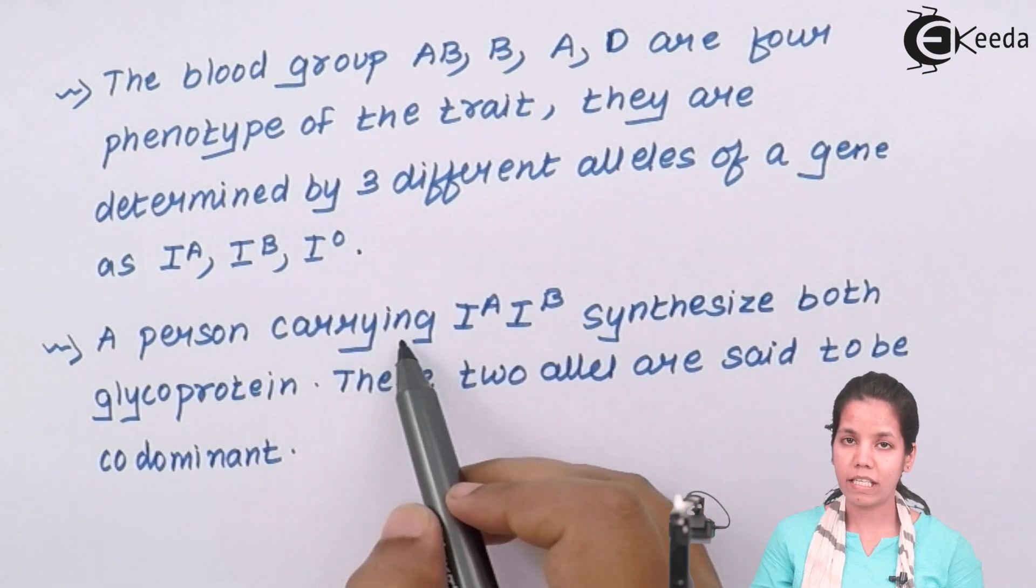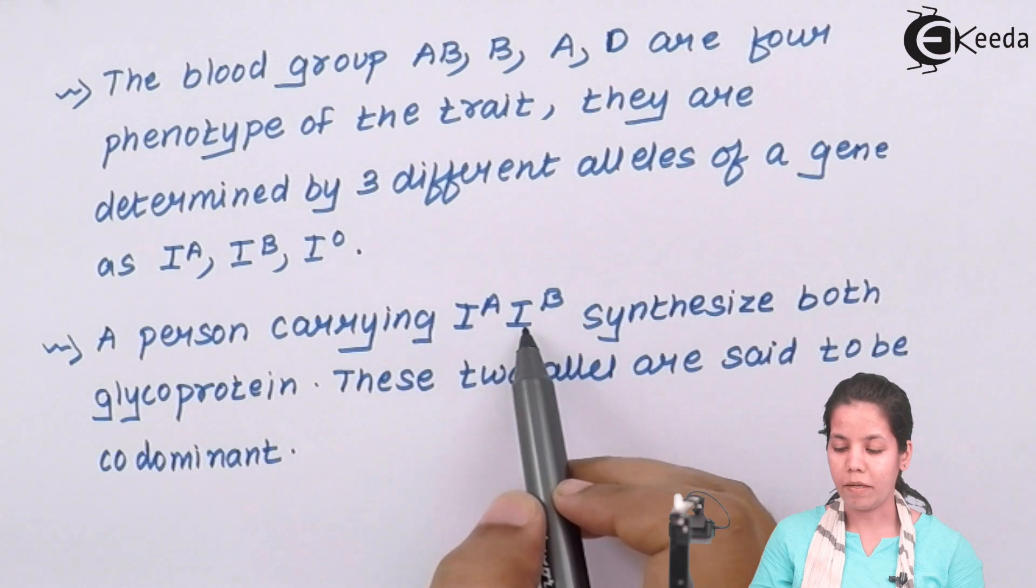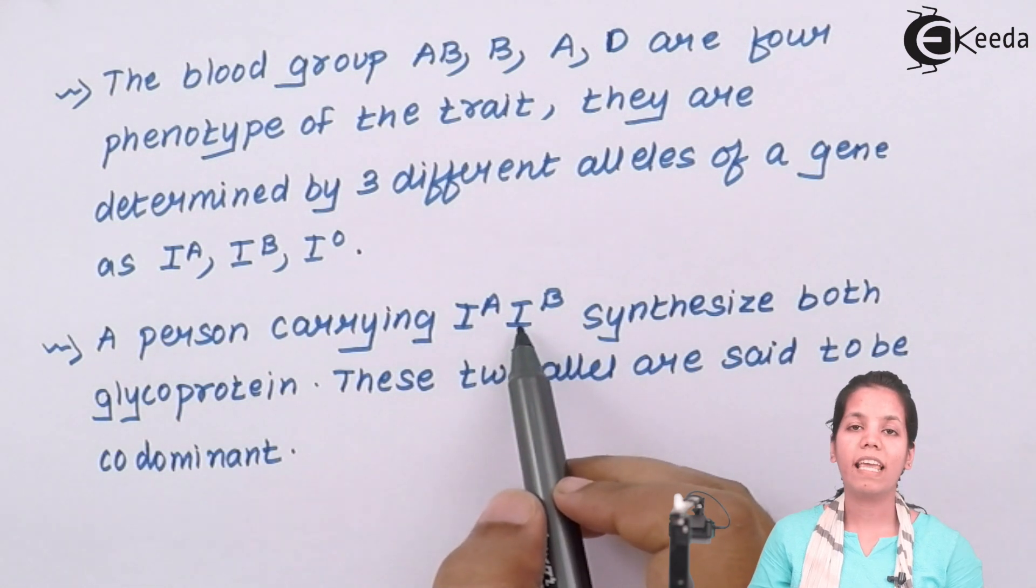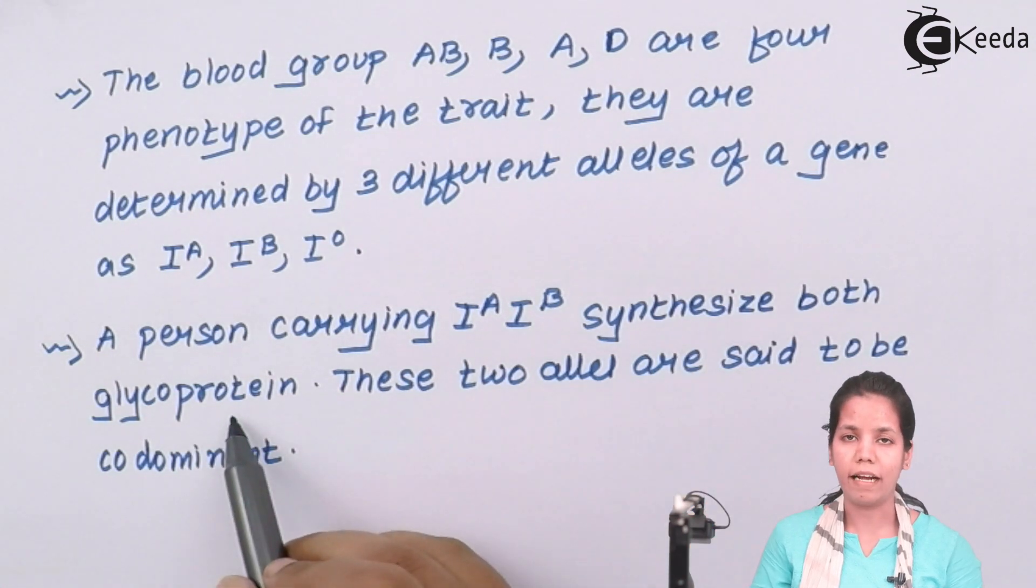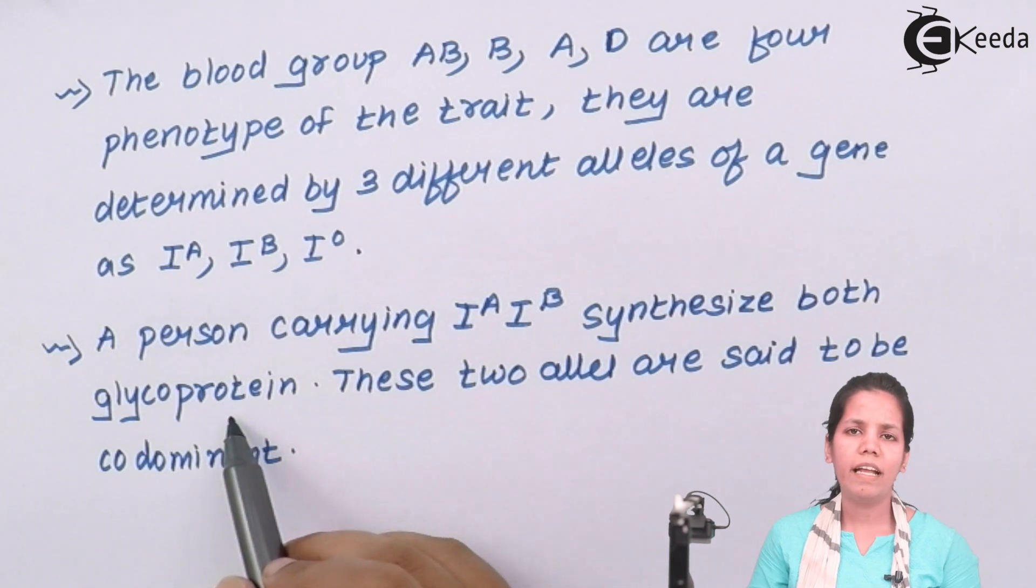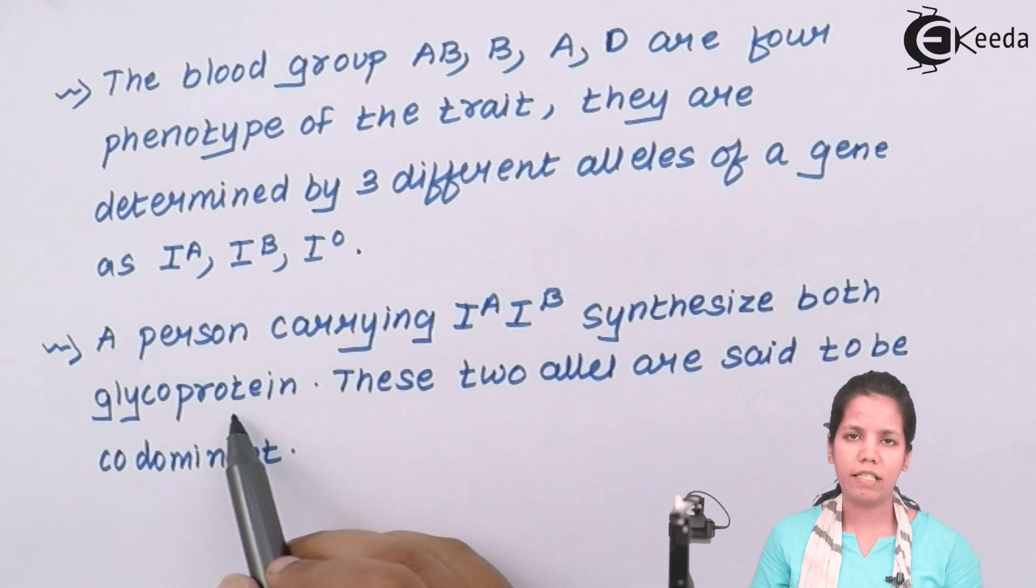A person who is carrying IA and IB, that is, a person who has AB blood group type, synthesizes both the glycoproteins. That is, you can say it synthesizes both the antibodies that are required. Now this individual, whether he is RH positive, RH negative, whatever is the scenario, can donate blood groups.